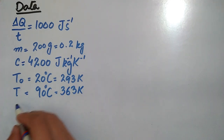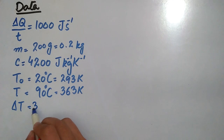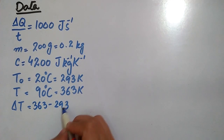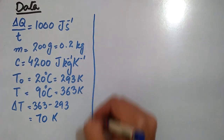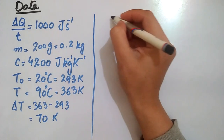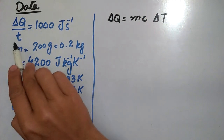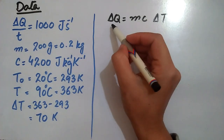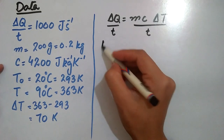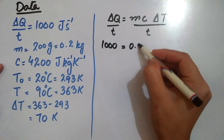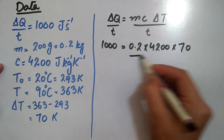Time के लिए relation है: delta Q is equal to mc delta T. अब यहाँ देखें, आपको rate of flow of heat given है, मतलब delta Q over t given है। दोनों sides पे time को divide कर देंगे। Values put करते हैं: delta Q over t equal to 1000, mass है 0.2, c की value water के लिए 4200, और change in temperature है 70, divided by time।